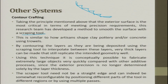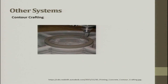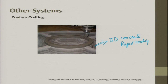This is similar to the use of artisan-shaped clay pottery and concrete using trowels. By contouring layers as they are deposited and using the scraping tool to interpolate between layers, very thick layers can be made that still replicate the intended geometry well. Using this technique, it is conceptually possible to fabricate extremely large bodies very quickly compared with other additive processes. Today, people also talk about 3D concrete rapid tooling using almost the same technique to get the required output.